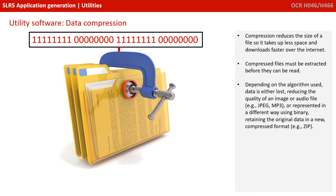Compression utilities reduce the size of a file so it takes up less disk space and is quicker to download over the internet. Compressed files must be extracted before they can be read. For example, a video on YouTube like the one you're watching now needs to be compressed because you want to watch it in real time — it needs to be streamed and there would just be too much data, especially if the video was high quality.